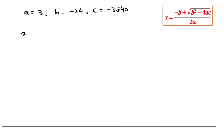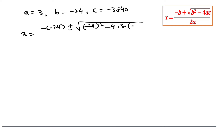Now substituting in the quadratic formula, we get x is equal to minus b, that is minus (minus 24), plus or minus under root of (minus 24) whole squared, minus 4 times a (that is 3) times c (that is minus 3840), all divided by 2 times a, that is 3.